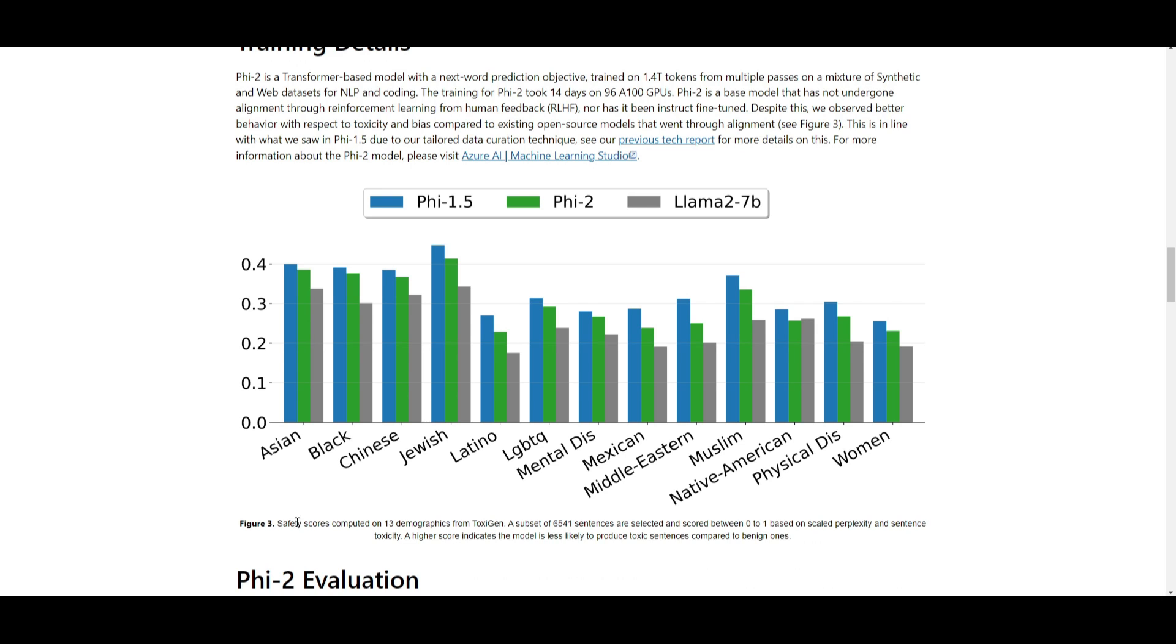That leads me to this figure where they're taking a look at safety scores computed on 13 demographics from ToxiGen, a subset of 6,541 sentences all scored between 0 to 1 based on scaled perplexity and sentence toxicity. A higher score indicates the model is less likely to produce a toxic sentence compared to benign ones. It shows that even though it did not undergo advanced training techniques, this model exhibited improved behavior regarding toxicity and bias compared to existing open-source models that underwent alignment. This aligns to the observed behavior from Phi-1.5 to the newer model, attributed to the tailored data curation technique.